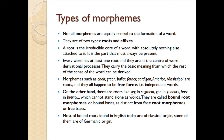On the other hand, there are roots like 'sig' in segment, 'gen' in genetic, 'brev' in brevity, which cannot stand alone as words. They are called bound root morphemes or bound bases, distinct from free root morphemes or free bases. Most of the bound roots found in English today are of classical origin. Some of them are of Germanic origin.